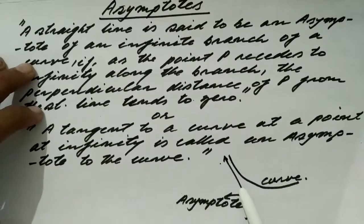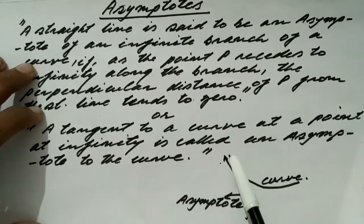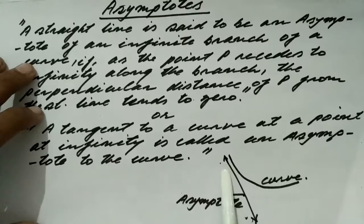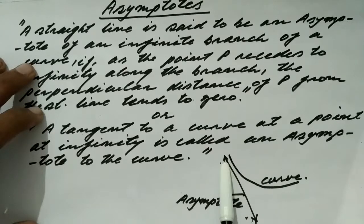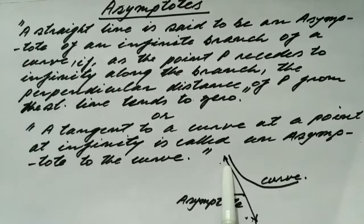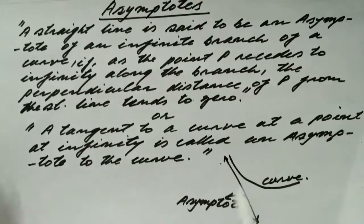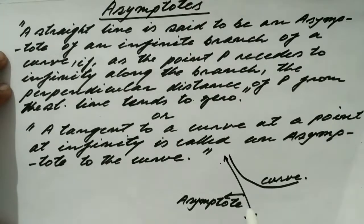Suppose this is a straight line and this is a curve. If a branch of a curve seems to be parallel to a straight line, it is assumed that this straight line touches this curve externally at some point at infinity — that is, at a great distance. In this case, this straight line is called an asymptote to this curve.